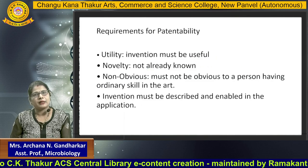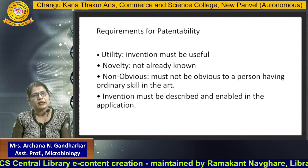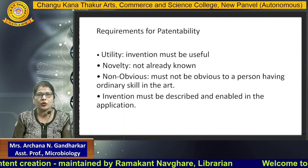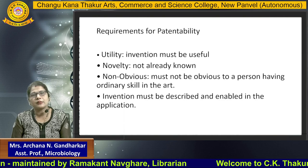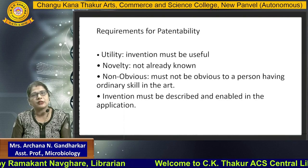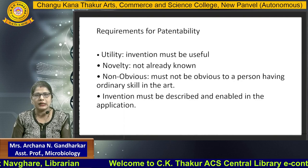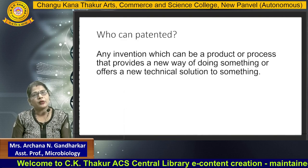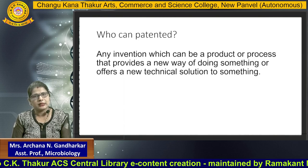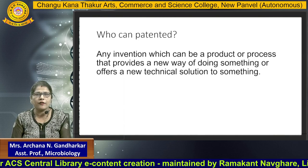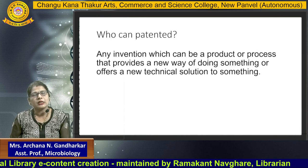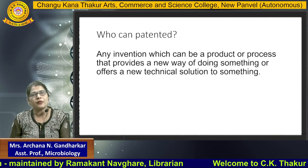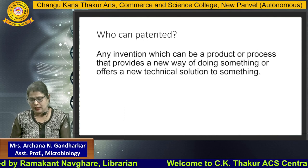What are the requirements of patents? There are four requirements. First is utility — the invention must be useful. Second is novelty — the invention should be novel, that is, not already known. Third, non-obvious — the invention must not be obvious to a person having ordinary skill in the art. Fourth, the invention must be described and enabled in an application form. Who can be patented? Any invention, whether a product or process, that provides a new way of doing something or offers a new technical solution — anyone with such a new invention can get it patented, regardless of age or gender.